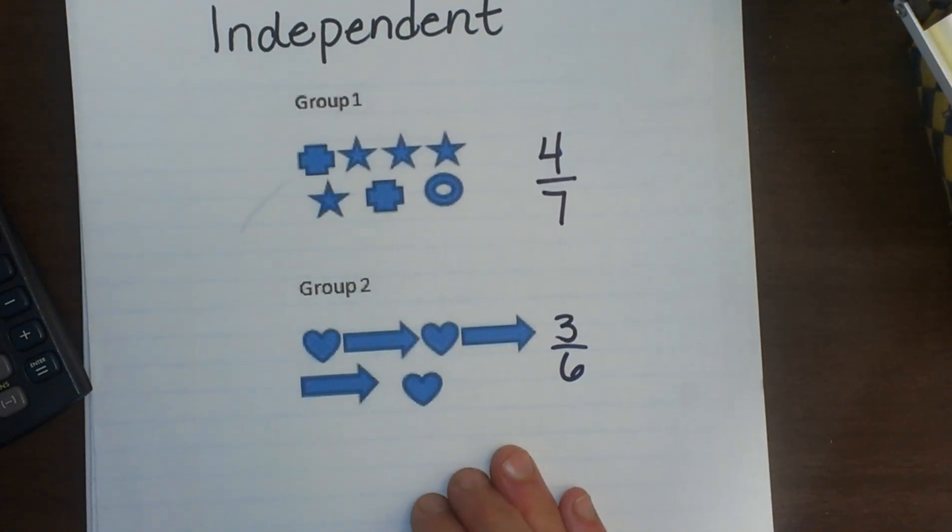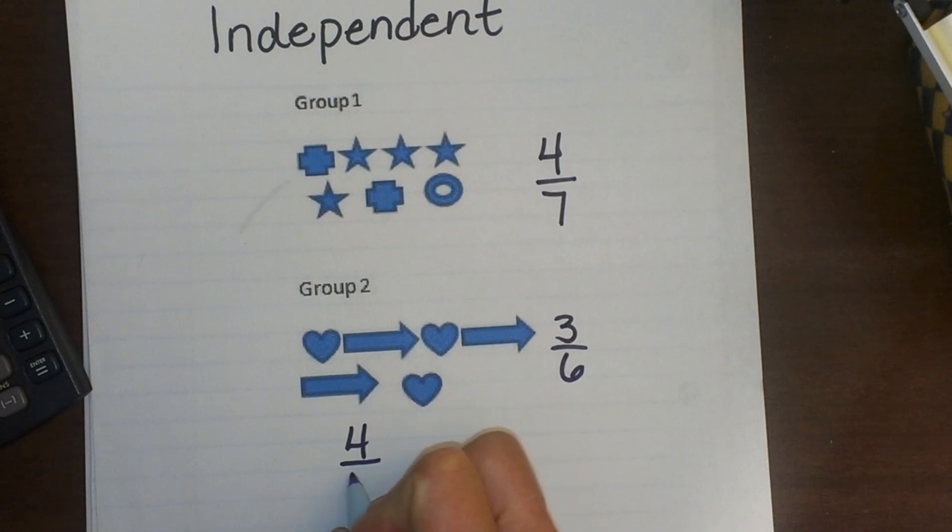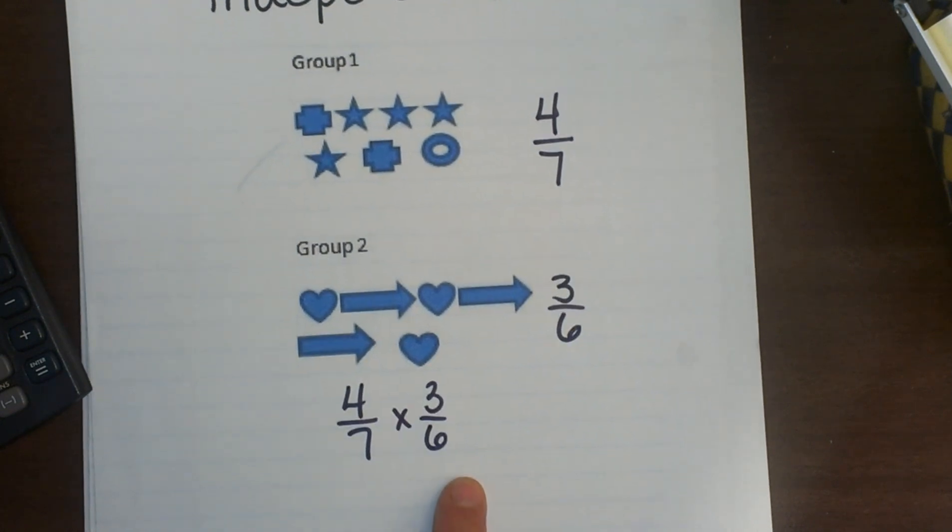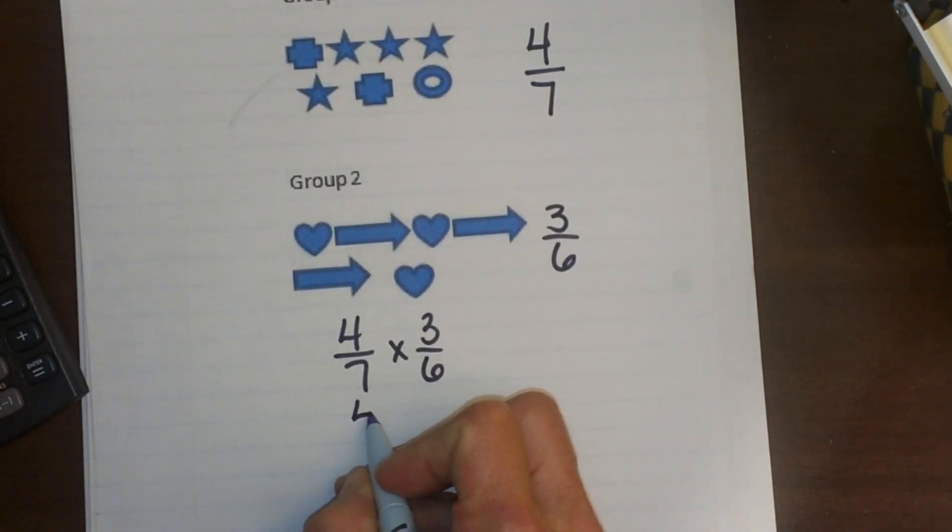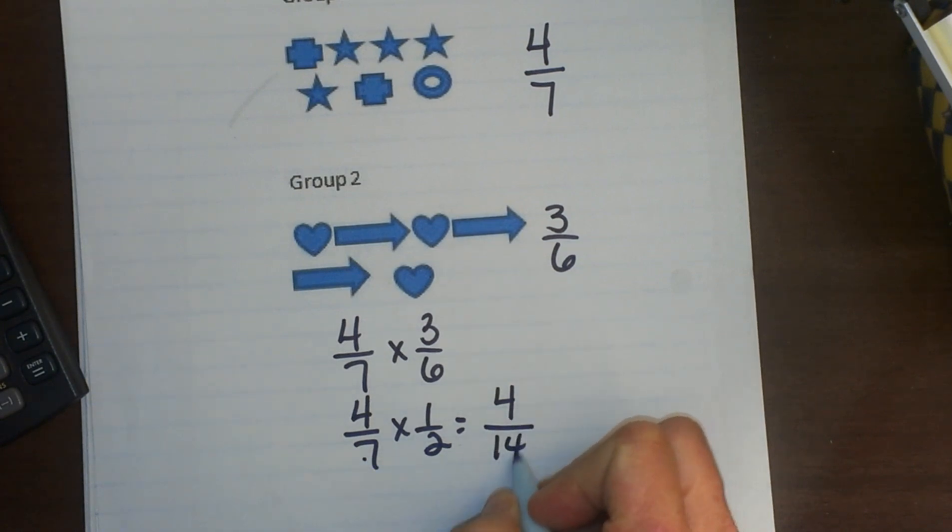So what is the probability of one happening and the other? Well and is a multiplying. So we are going to take four-sevenths and multiply that times three-sixths. Now one nice thing about three-sixths, we can go ahead and reduce that. So let's make that four-sevenths times one-half and that will multiply to top times top is four, bottom times bottom is fourteen, and that reduces to two-sevenths.